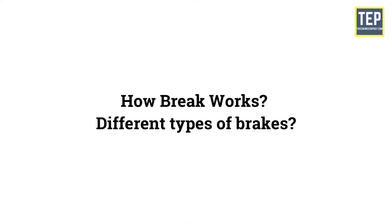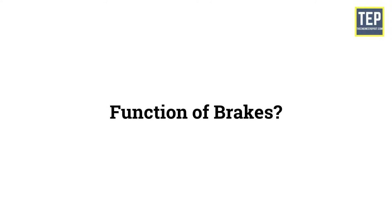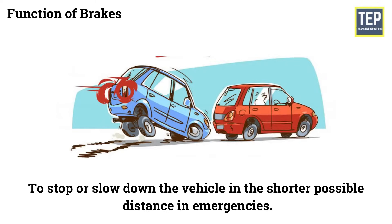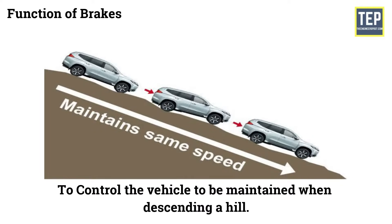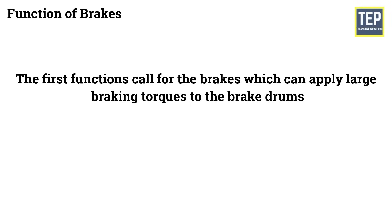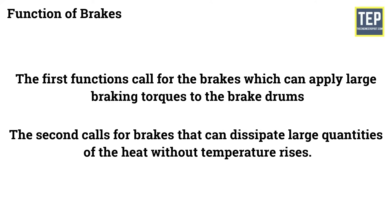In this video, I'll show you how brakes work and what are the different types of brakes that you can use. Let's get started with the function of brakes. There are two distinct functions of the brakes. Number 1: to stop or slow down the vehicle in the shortest possible distance in emergencies. Number 2: to control the vehicle speed when descending a hill. The first function calls for brakes which can apply large braking torques to the brake drums, while the second calls for brakes that can dissipate large quantities of heat without temperature rises.